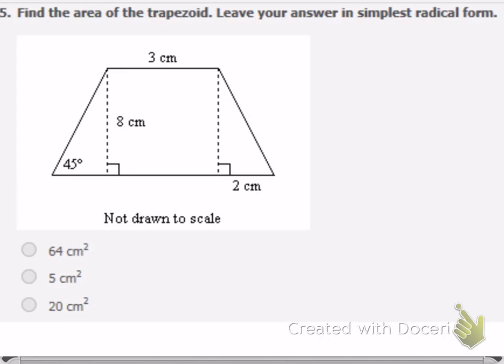Now simplest radical form means that it's okay to have square roots in your answers. Now that doesn't necessarily come into play every time you're dealing with a problem with those directions, so don't let that fool you.